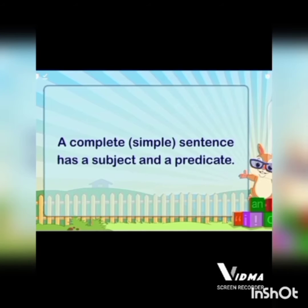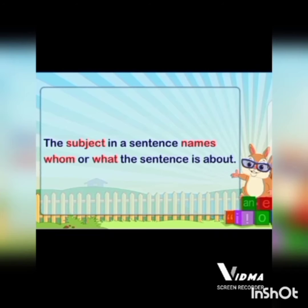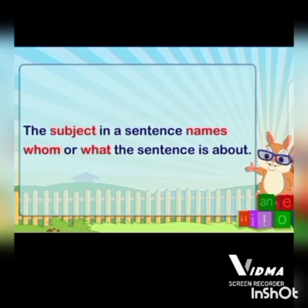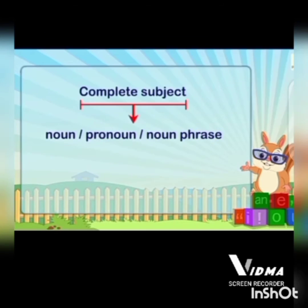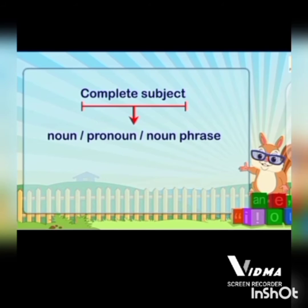A complete simple sentence has a subject and a predicate. A complete subject has a noun, pronoun, or noun phrase. All of these make a complete subject.